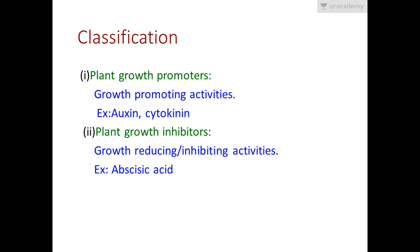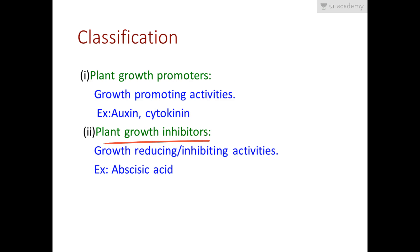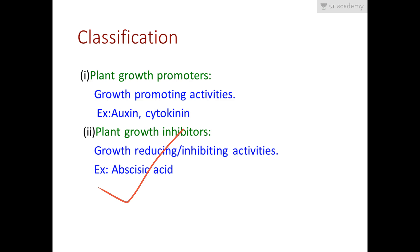We can classify plant growth regulators into two parts: promoters and inhibitors. Promoters give positive feedback to plant growth — they help in growing parts of the plant, with examples like auxin and cytokinin. Plant growth inhibitors have growth-reducing or inhibiting activities, giving a negative feedback to plant growth, and an example is abscisic acid.